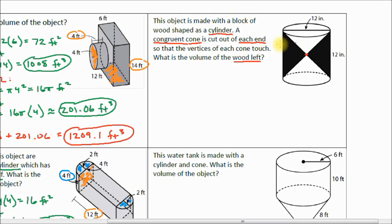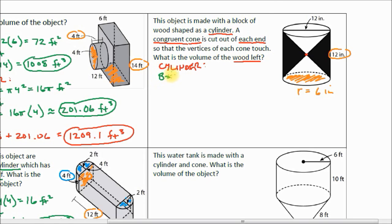The first thing we have to do is figure out the area of the cylinder first. Let's pick a base — a cylinder always has bases that are circles. That means this must be our height. If 12 inches is the diameter of the base, that means our radius is 12 divided by 2, so our radius is 6 inches. The base area of a cylinder is pi r squared, so it's going to be pi times 6 squared, which is 36π inches squared.